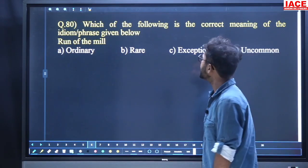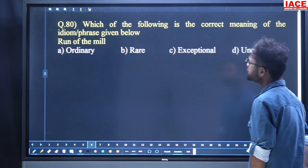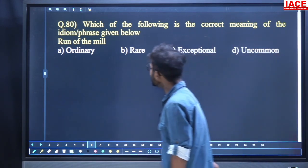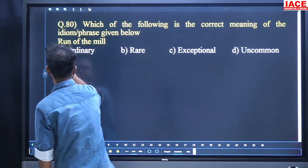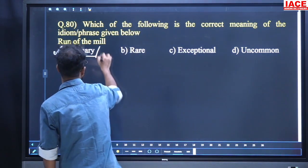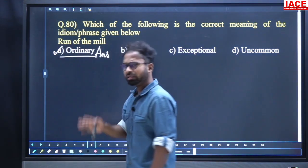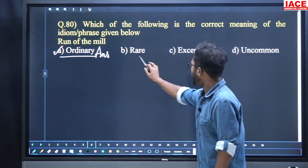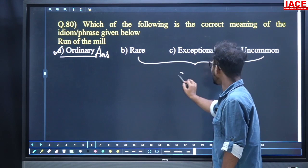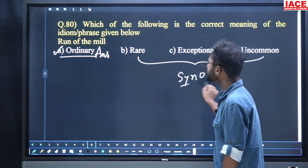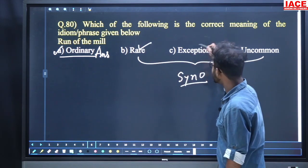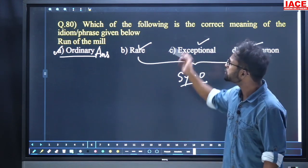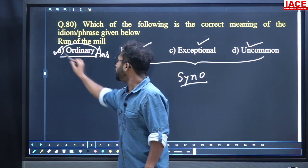Come to question number 80. Which of the following is the correct meaning of the idiom or phrase given below? The phrase is 'run of the mill'. Run of the mill means ordinary — mediocre, ordinary people. The options rare, exceptional, and uncommon are all synonymous with each other, opposite to ordinary. For question 80, run of the mill means ordinary.